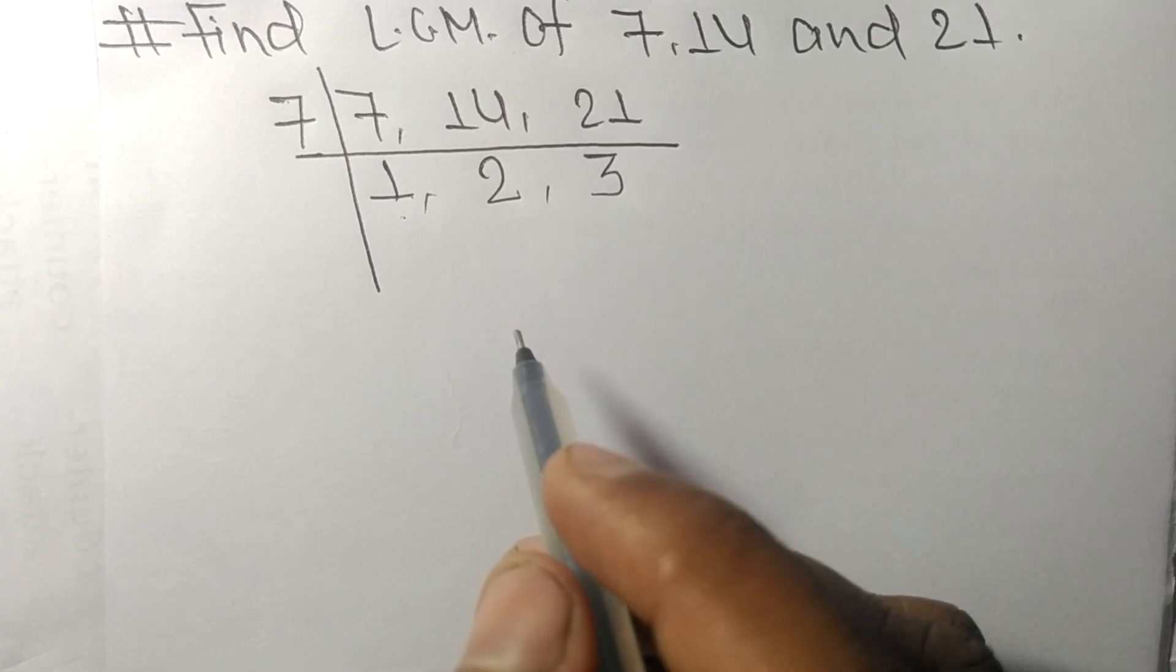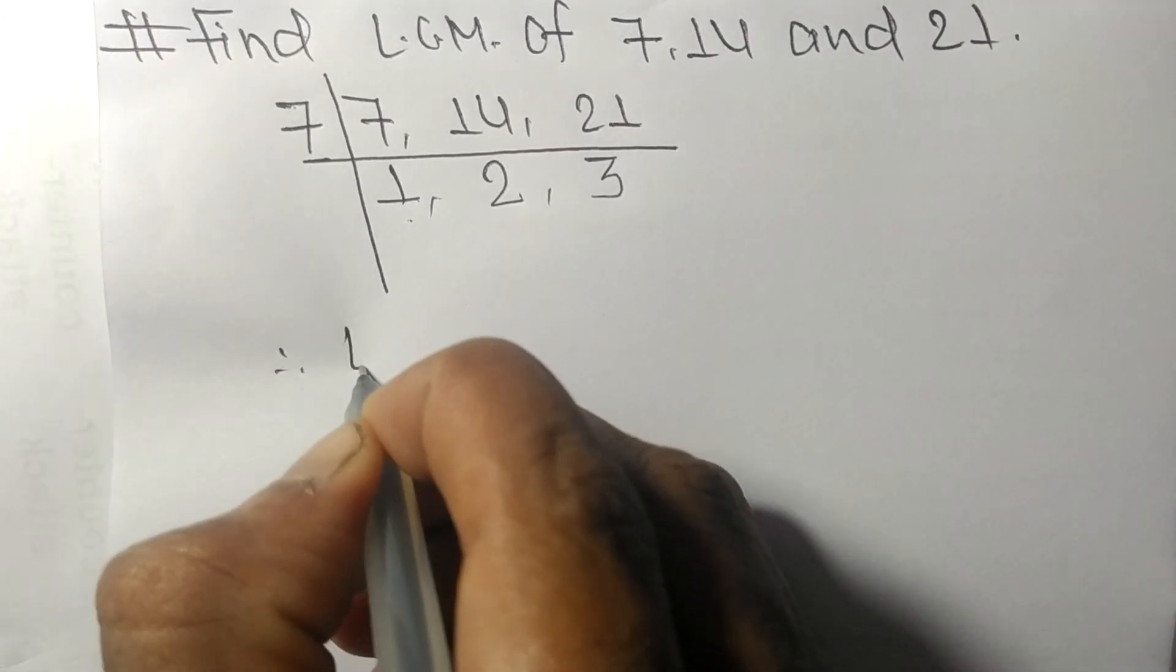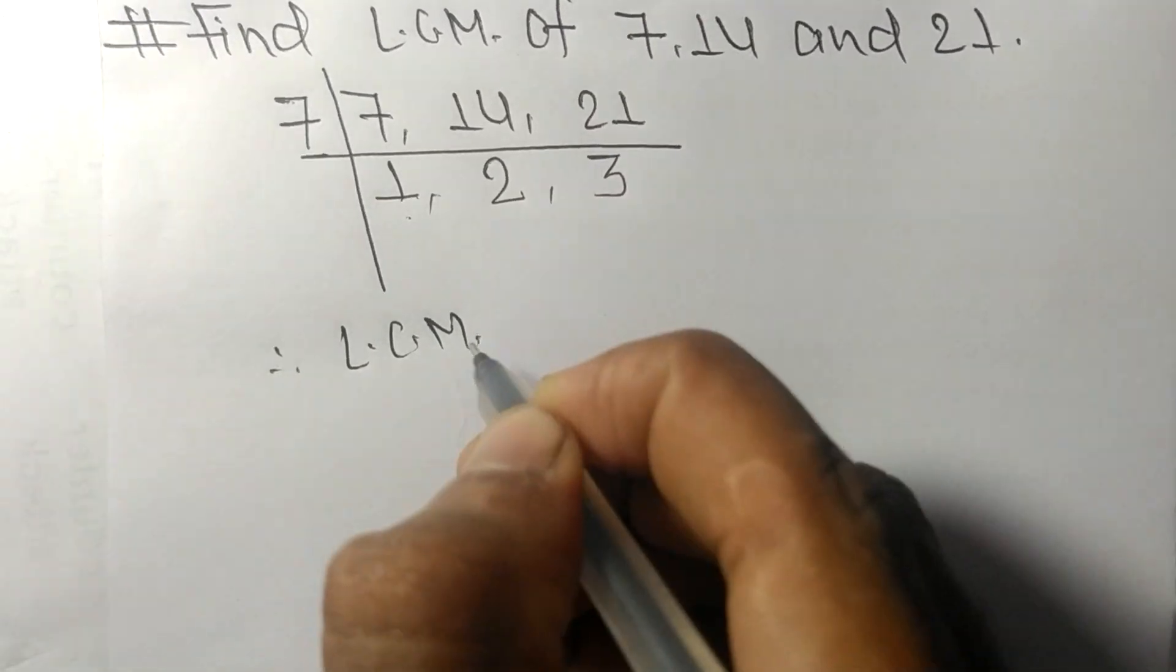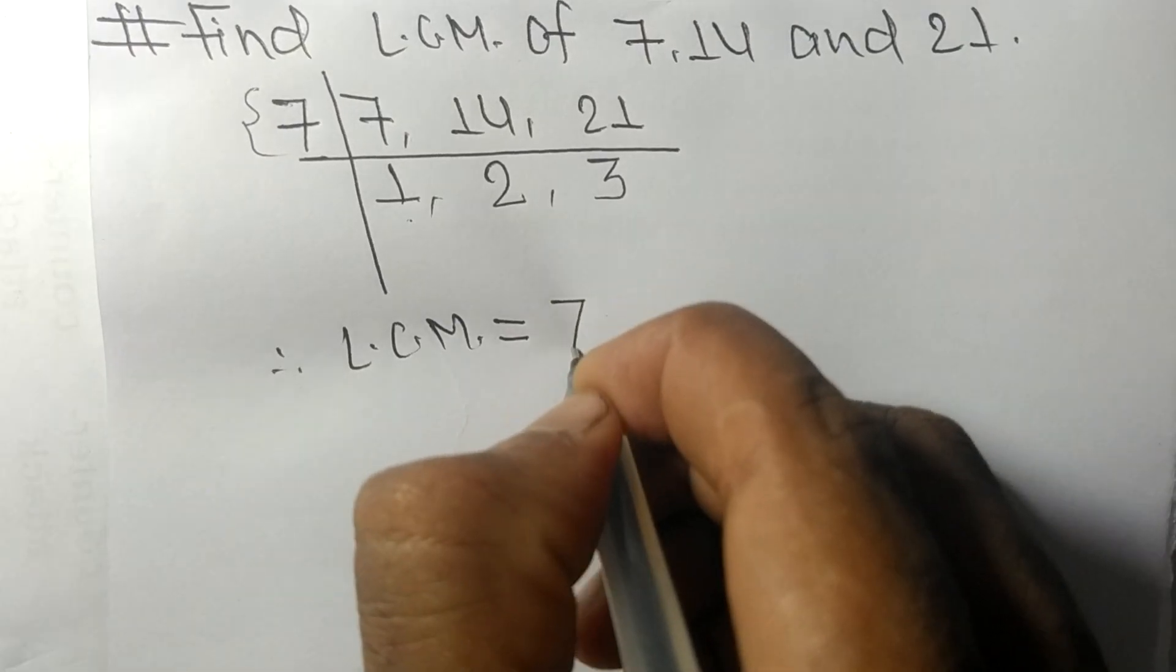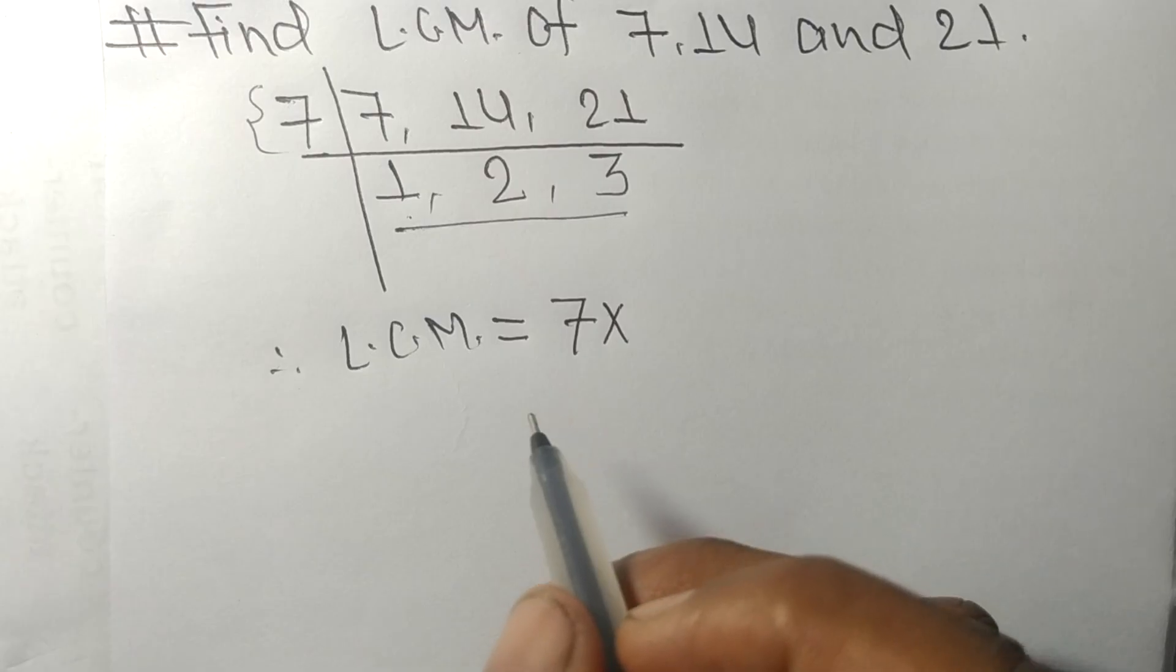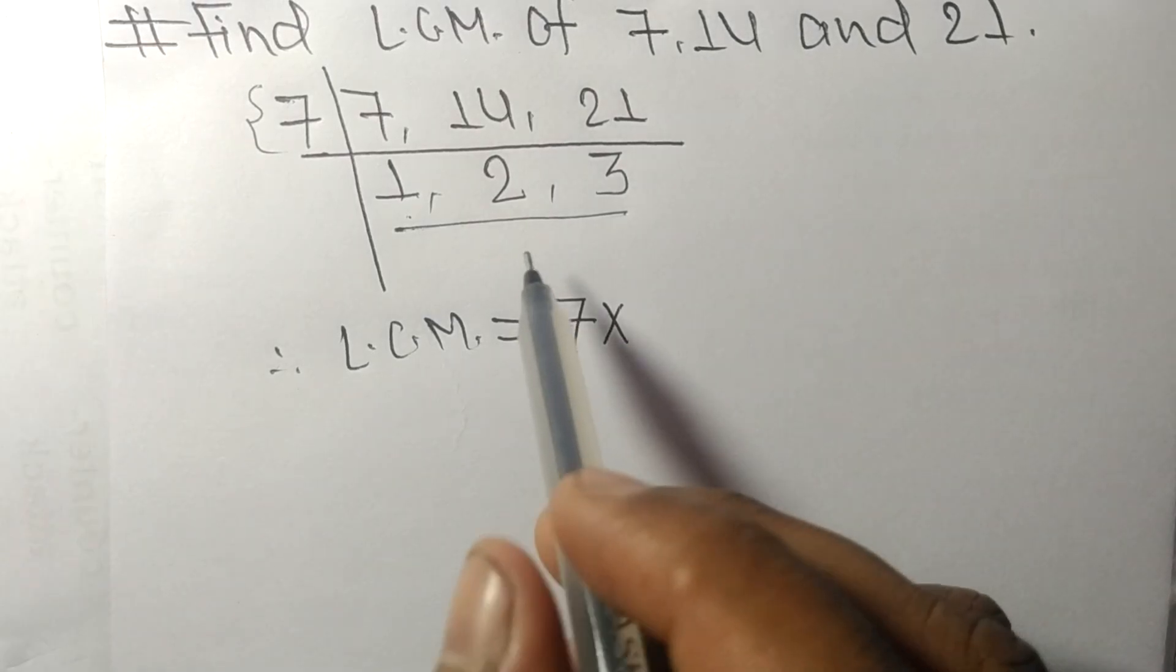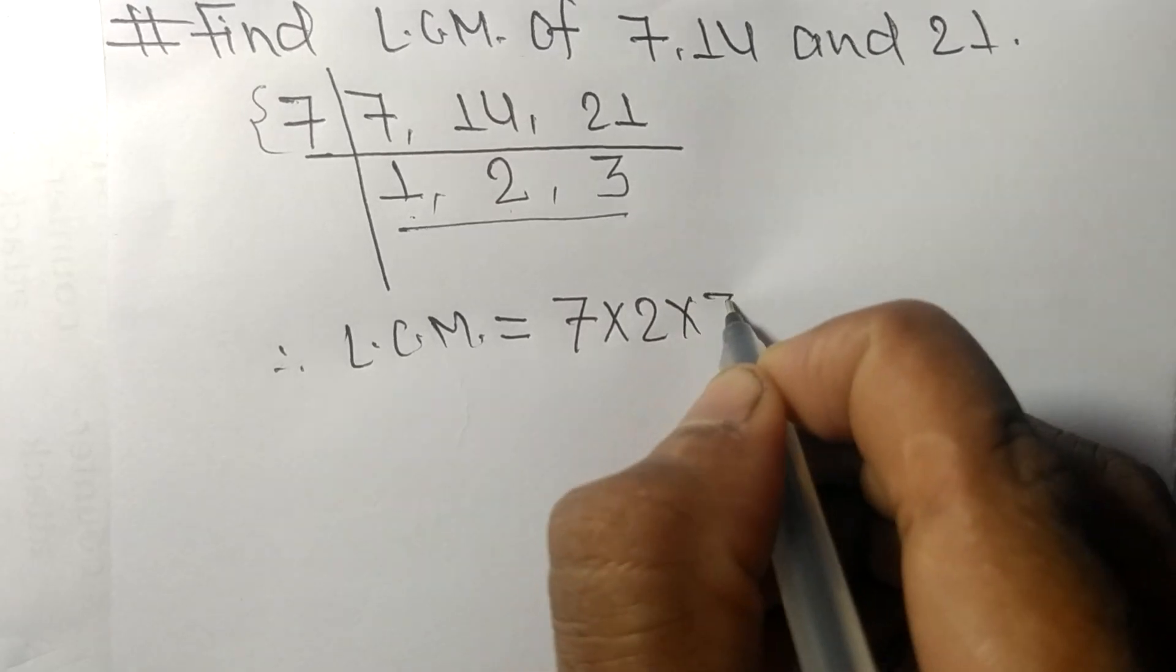Which are not exactly divisible by the same number. Therefore its LCM is equal to: from this side it is 7, from this side we take the numbers greater than 1, that is 2 and 3.